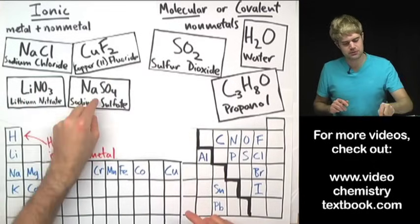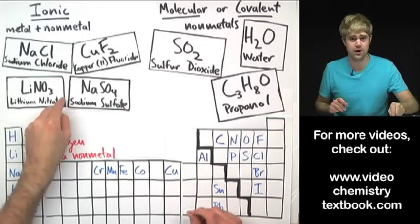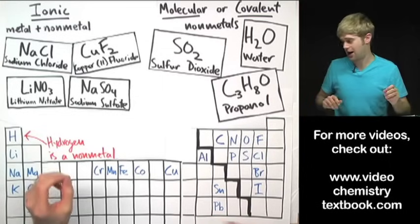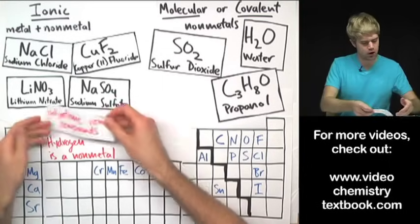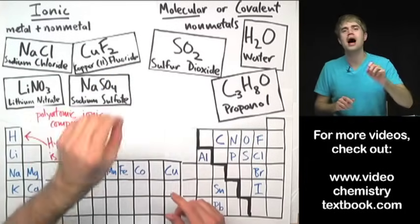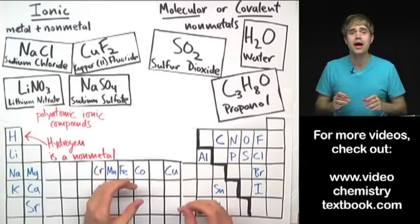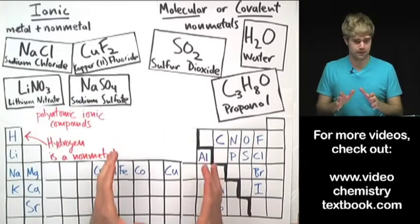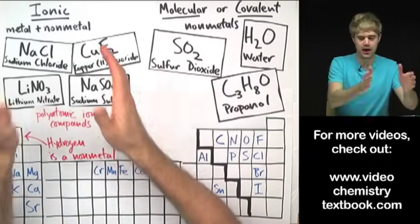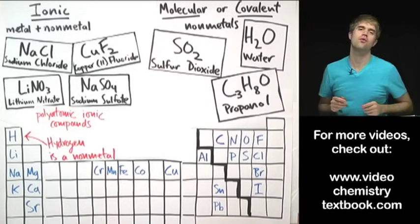Now, lithium nitrate and sodium sulfate are actually special kinds of ionic compounds because they have two different non-metals in them. They are what are called polyatomic ionic compounds. If you want to learn more about these, I've got videos on that. So now we can look at a chemical formula and we can decide whether something is ionic or whether it's molecular or covalent.